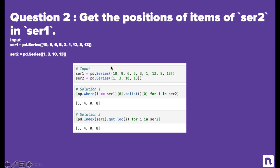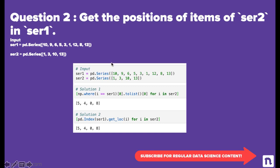You can check the answer as well. The first element of series two is one. The location of one in the first series would be at index zero, one, two, three, four, five — one is present at the fifth index. In Python, the indexing starts from zero, so the first element is zero, the next is one, and so on. In the case of R, the index starts from one — the first element would be one, the second would be two, the third would be three.